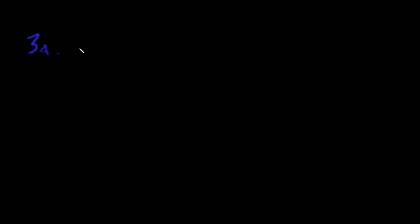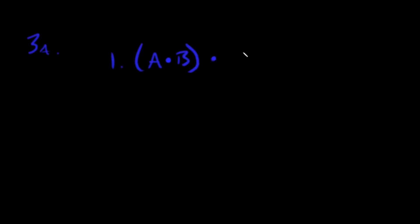Let's take a look at problem 3a — this is page 33 in the book. I'm going to give it to you as I would on a quiz. We've got one assumption: a dot b dot c. He uses ampersands for ands; I'm going to use dots. This is your one and only assumption — this is what you're given — and you need to solve for a dot c.